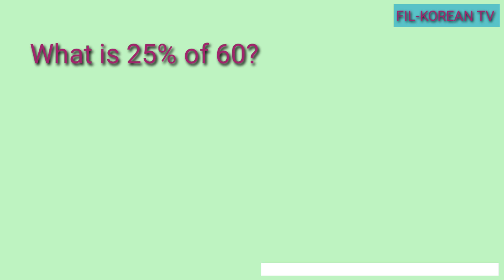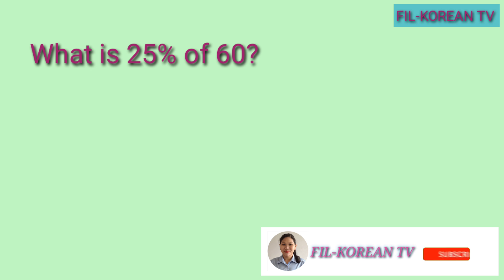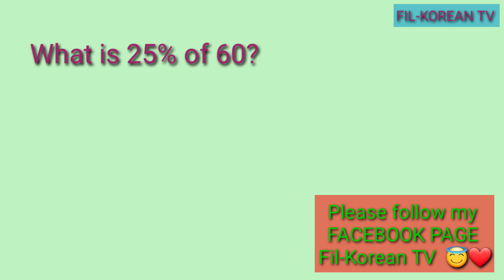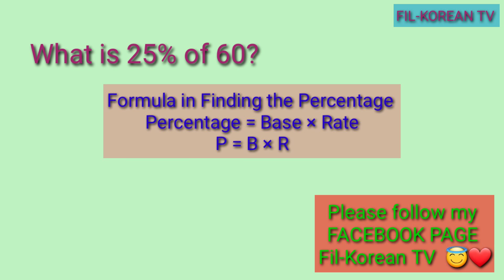Now, let us answer this question: What is 25% of 60? Para masagot natin ang tanong na ito, alamin natin muna kung anong mga element ang nandyan. Yung 25% ay rate. Ang 60, kung napapansin ninyo, sumunod siya sa 'of', kaya yan ay base. Ang nawawala ay percentage. Ang formula sa pagkuha ng percentage ay: percentage equals base times rate, or P equals B times R. Yung P ay percentage, B ay base, R ay rate.